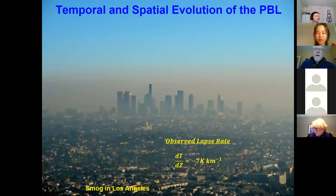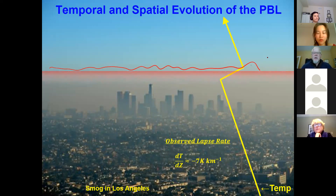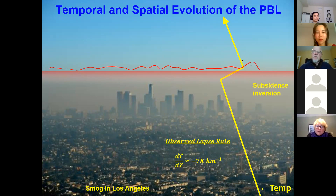This next slide shows smog in Los Angeles. The color of the smog and the cap visible are due to the boundary layer — the mixed boundary layer. The temperature decreases with height, and the observed lapse rate may be about 7 Kelvin per kilometer instead of the theoretical 10, partly due to condensation of water which adds heat as we go up. Very often we have a subsidence inversion — an increase in temperature at some height — that creates an inversion which traps pollutants into the lower layer.